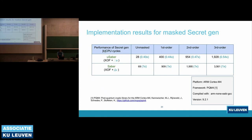This is the implementation result for secret generation, which is the only different component in uSaber compared to Saber. In the unmasked version, it takes only 40% of the time compared to Saber's version. For first-order, it takes only 44% of the time compared to Saber. For second-order, it's 47%, and for third-order, 54%. This component makes uSaber faster than Saber, due to the different sampler and the reduced parameter set.